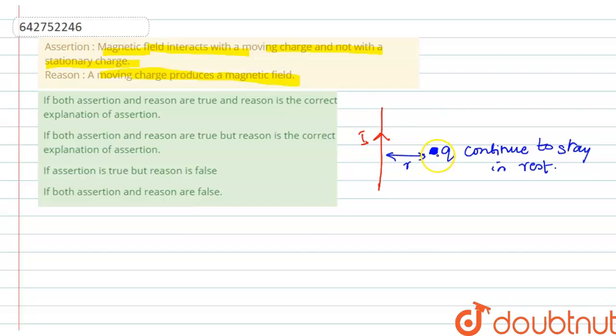Let us consider a conductor and the charge Q is moving with velocity V in this direction. Then, charge particle will deflect in the direction towards the conductor.